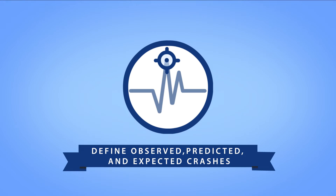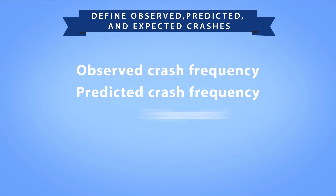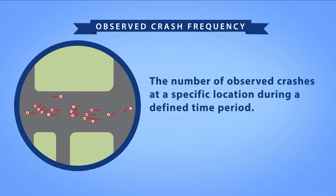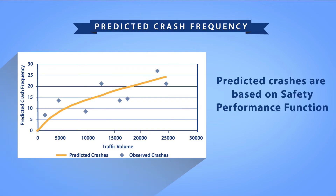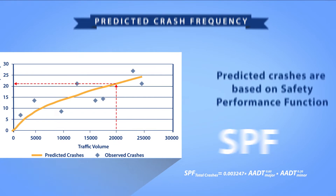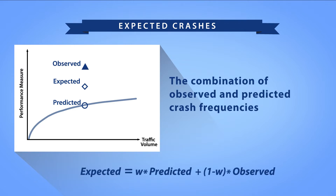There are three approaches to define the safety performance of a facility: observed crash frequency, predicted crash frequency, and expected crash frequency. Observed crashes are those reported and documented at a site of interest, and the observed crash frequency is simply the number of observed crashes at a specific location during a defined time period. Predicted crashes are based on a safety performance function, or SPF, and when you use an SPF to estimate crashes, the result is the predicted crash frequency. The expected crash frequency is the combination of observed and predicted crash frequencies, specifically using the empirical Bayes, or EB method, to compute a weighted average of the observed and predicted crash frequencies.